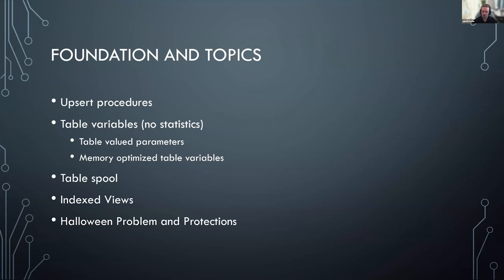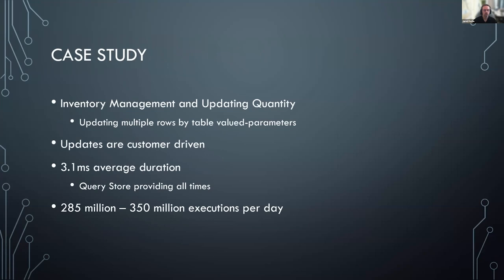This was a case study in tuning a specific stored procedure. I'll be working with anonymized execution plans since I can't share the actual code. This is part of our inventory management system, specifically the part updating quantity for items customers have for sale. The stored procedure updates multiple rows using a table valued parameter passed into the procedure. The table tracks quantity, and each item may have multiple records depending on how many distribution centers it's present in. Updates are customer-driven — when making a sale or getting new stock, they send updates through a variety of methods and we need to process them as quickly as possible.